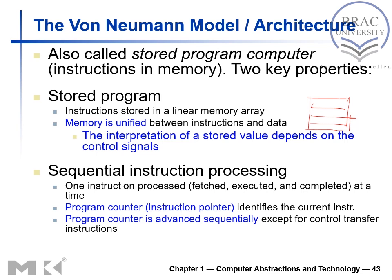Sequential instruction processing means execution goes from one instruction to the next — here to here, here to here, and so on. After one instruction is processed, it goes to the next, then the next, in sequential order, unless there is a branch or jump instruction.